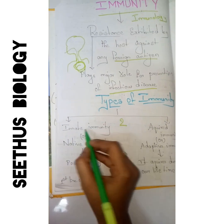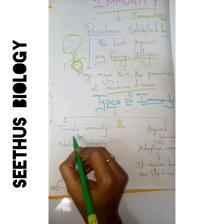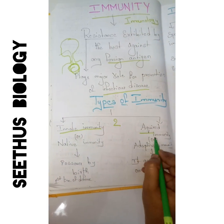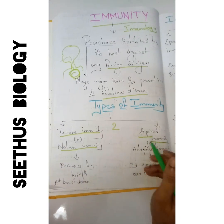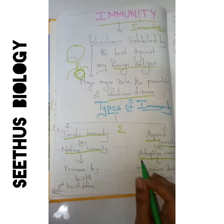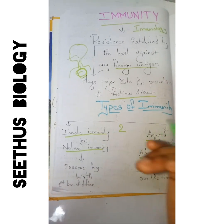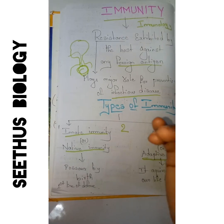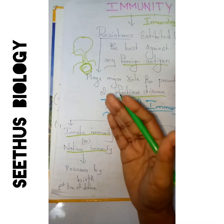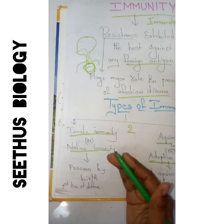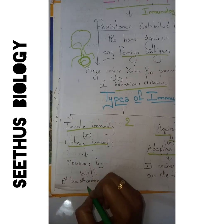Immunity is split into two types: innate immunity and acquired immunity. Innate immunity is also known as native immunity, and acquired immunity is also known as adaptive immunity. As the name suggests, innate or native immunity is present in our body from birth onwards — the person possesses this type of immunity from birth only.